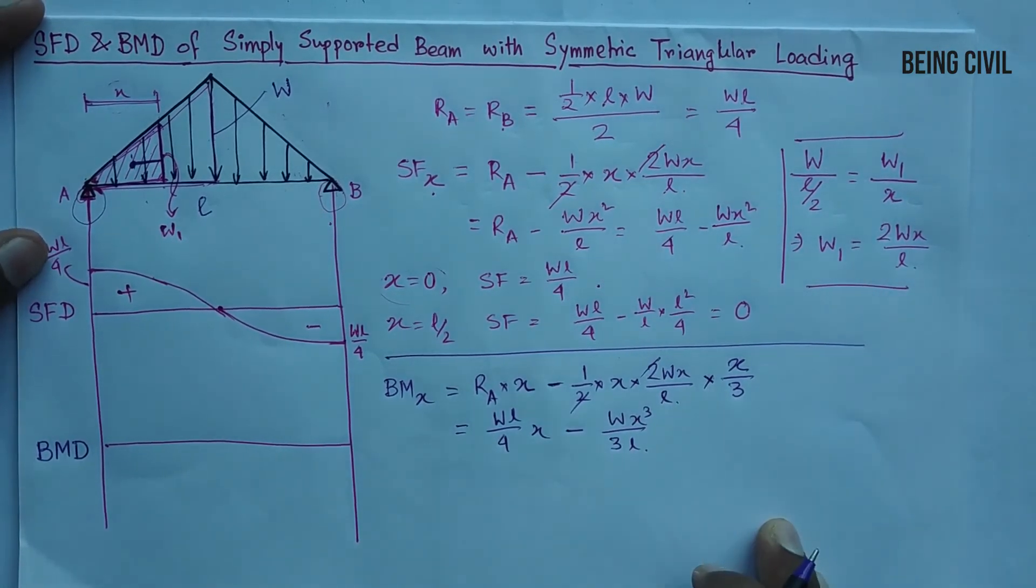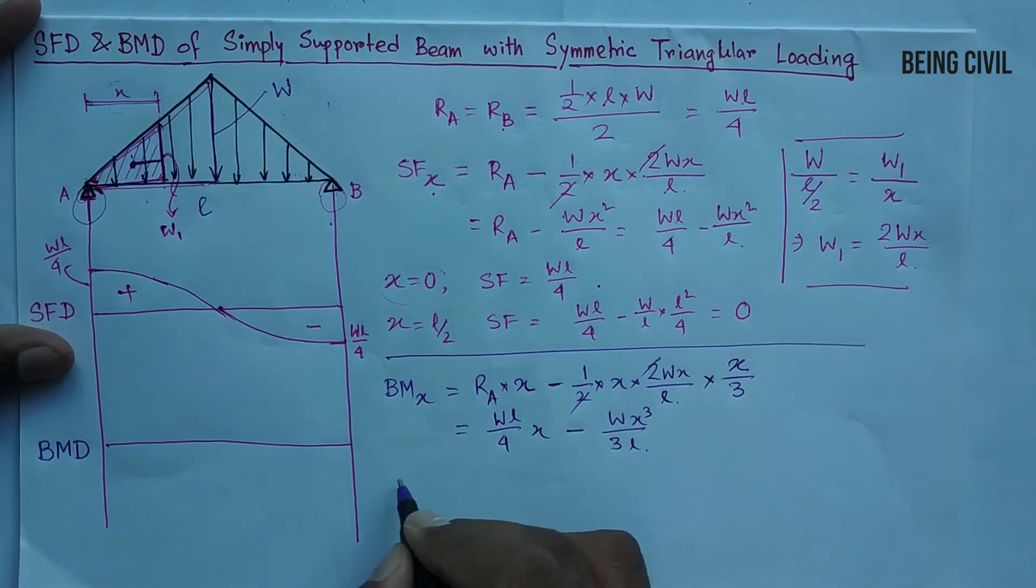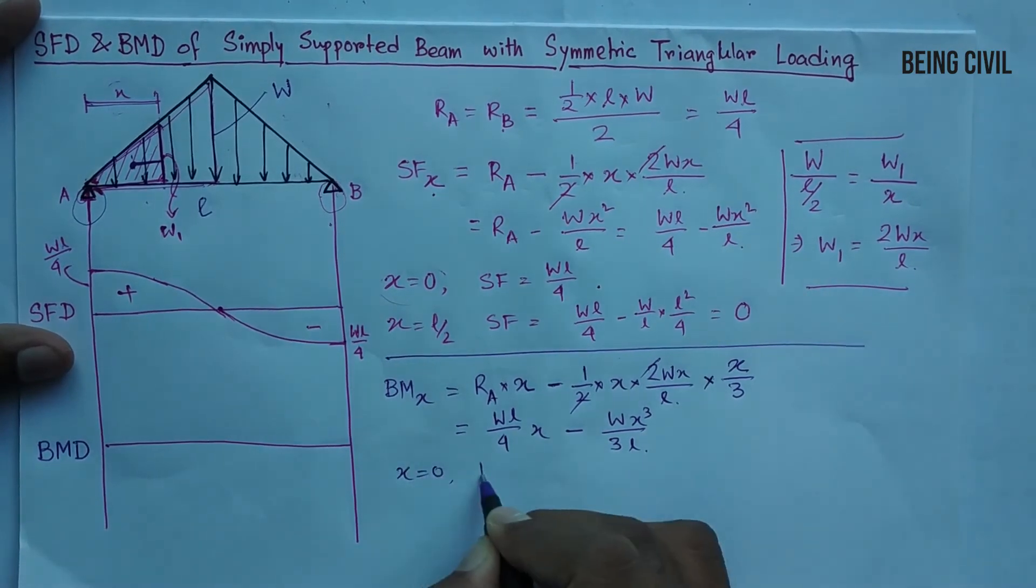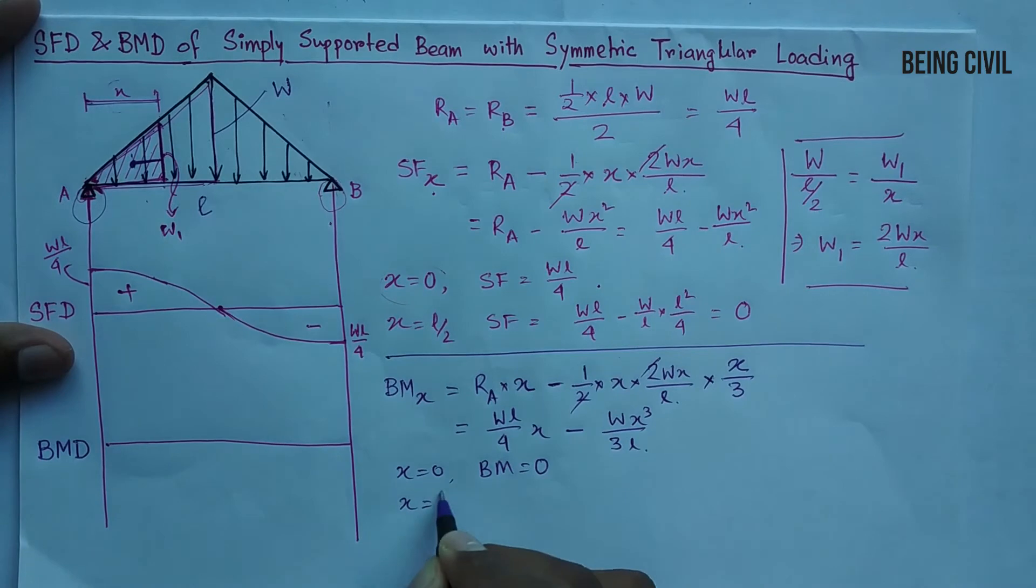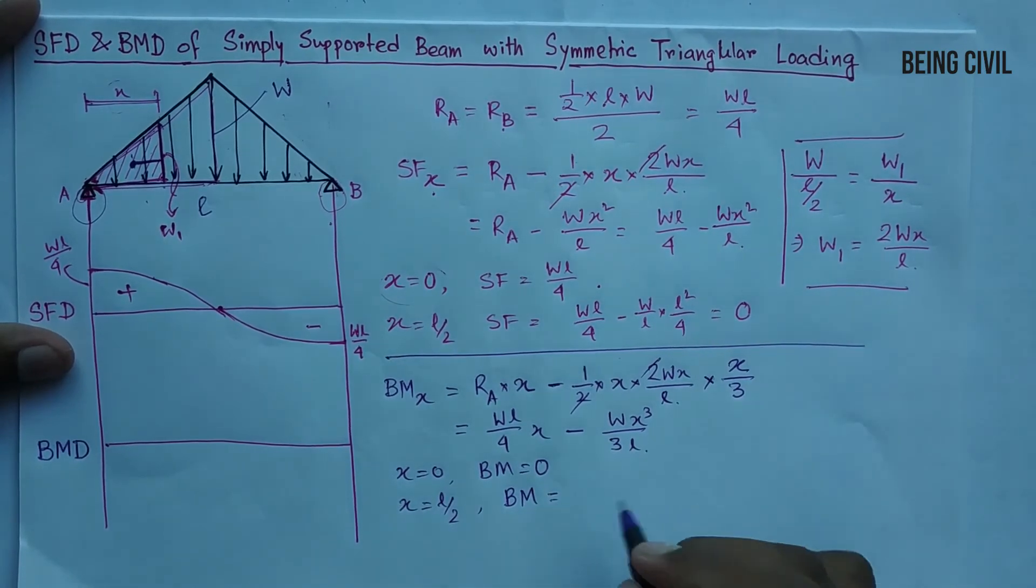So this is the bending moment equation. Put the value of x equal to 0, you get bending moment plus 0. At x equal to L by 2, you get the maximum bending moment.